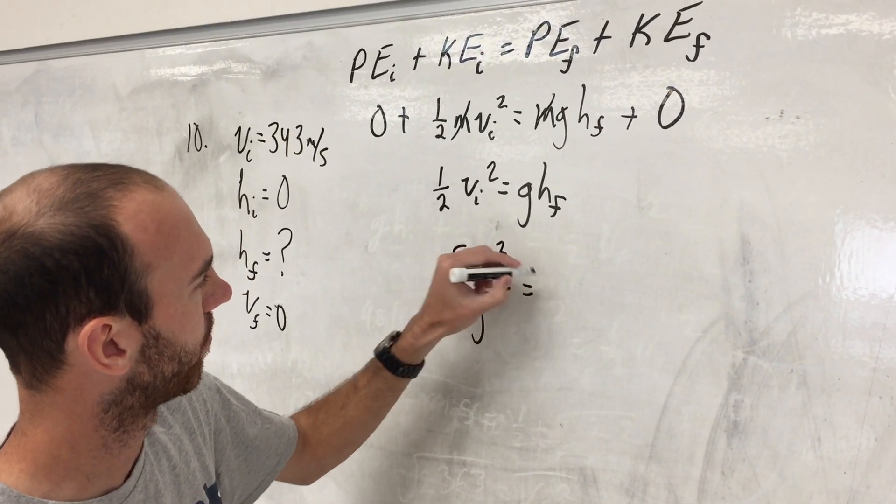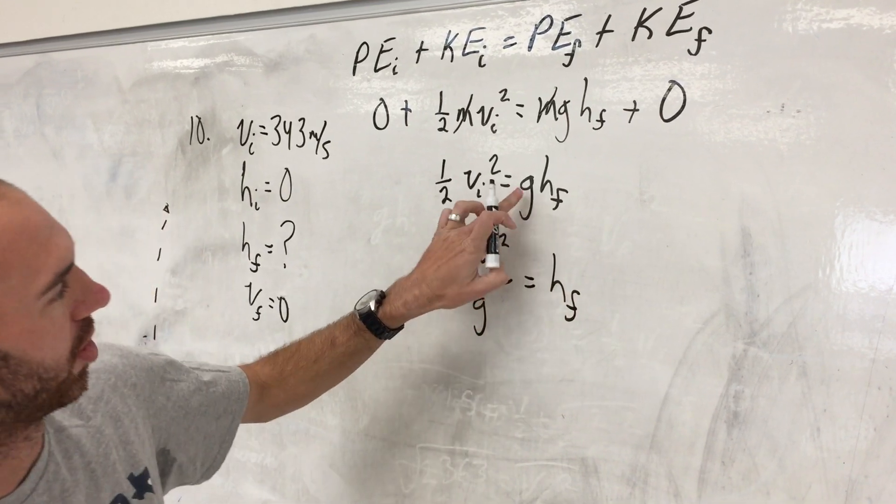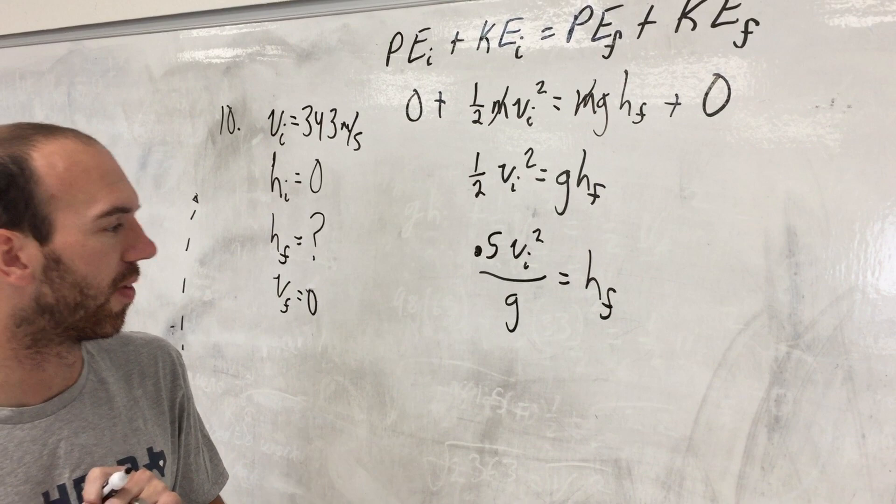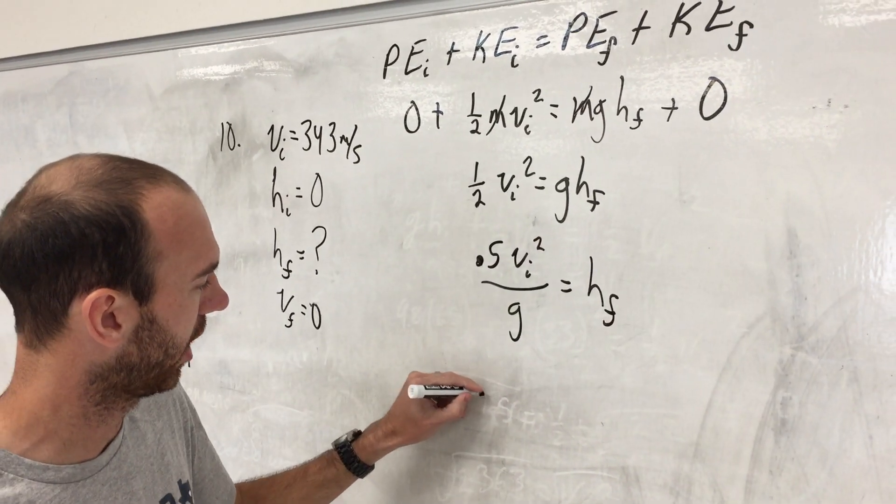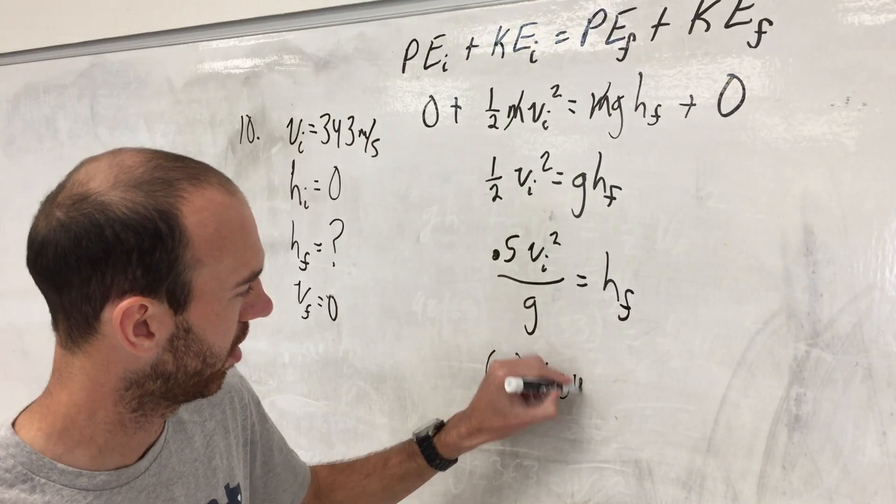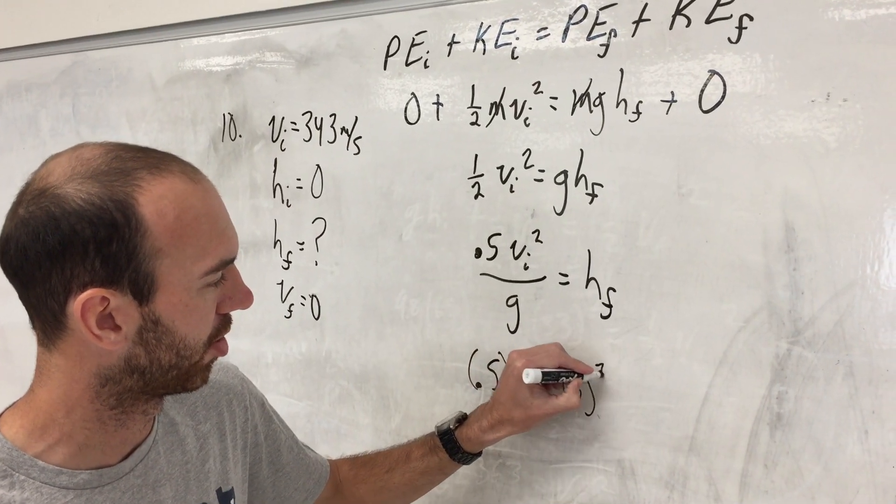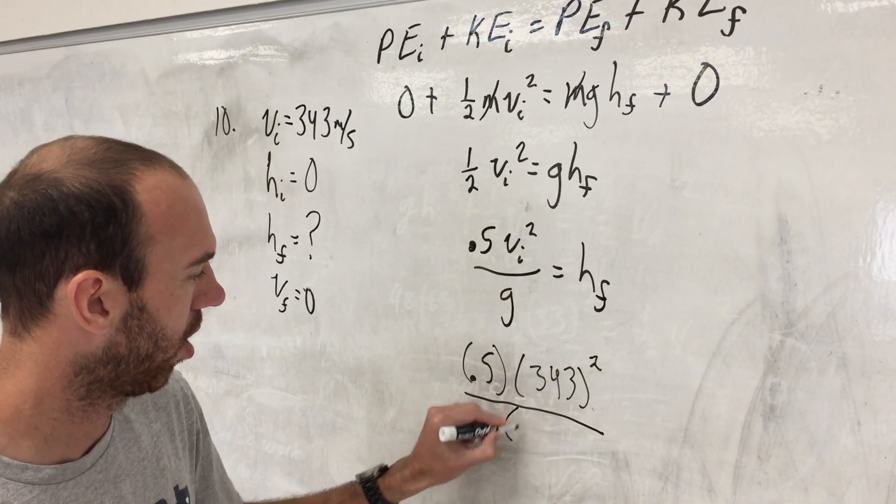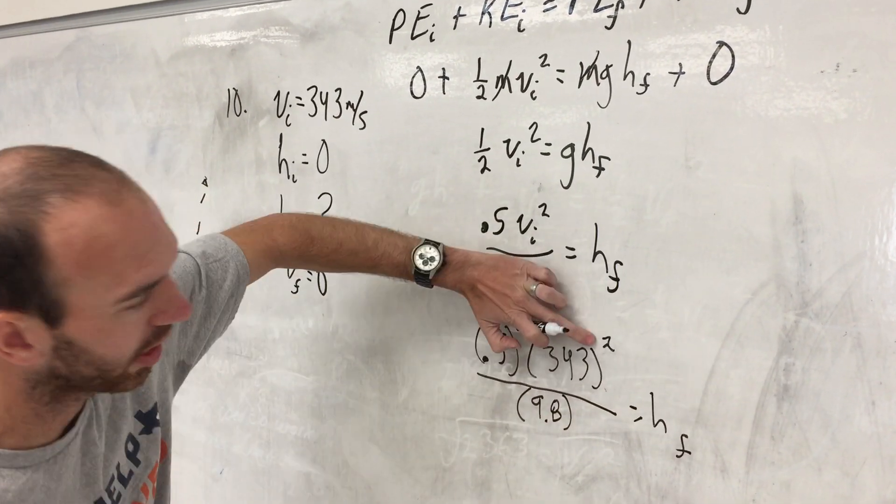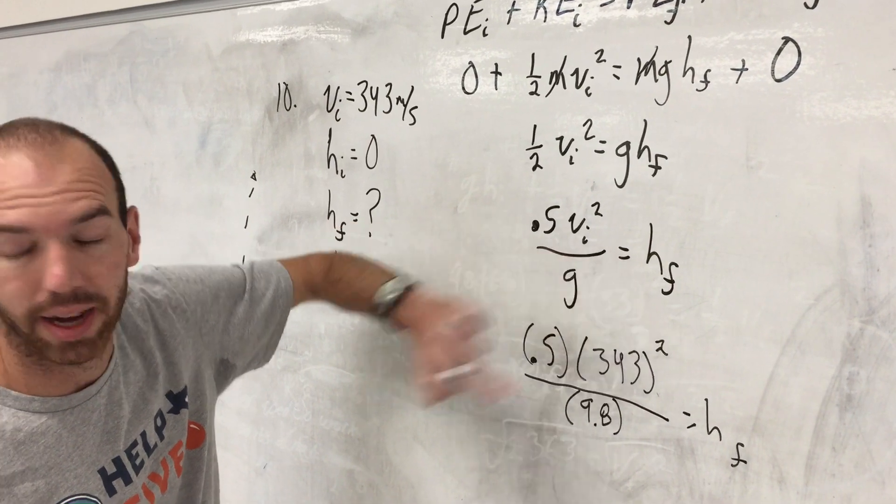We are looking for how high it goes, so I'll rewrite that half as a 0.5 and divide by g because g is multiplying h final, so I need to divide it to get h final by itself. So plugging in, we have a half times our initial speed of 343 meters per second squared all over 9.8 equals h final. Main thing in your calculator, don't forget to square your speed.